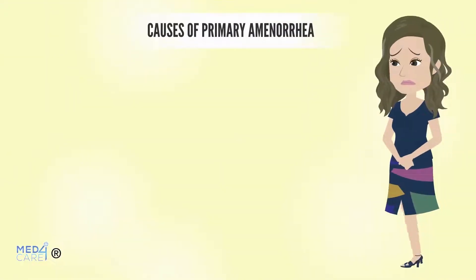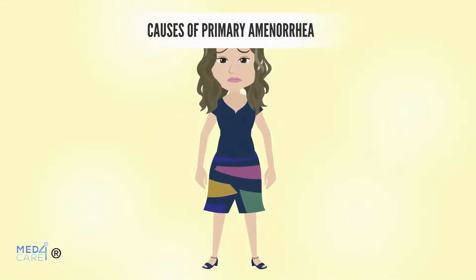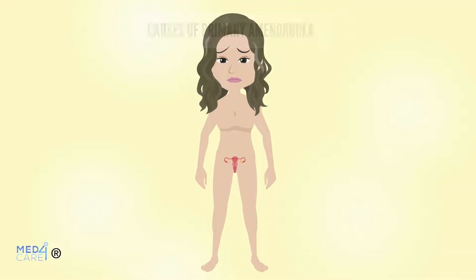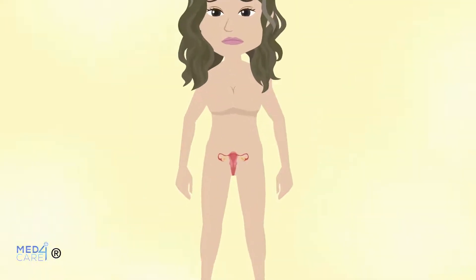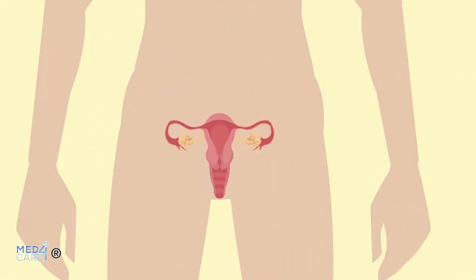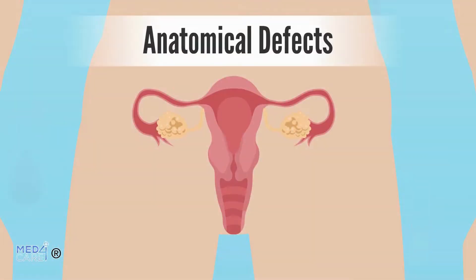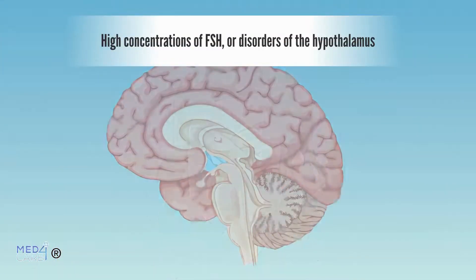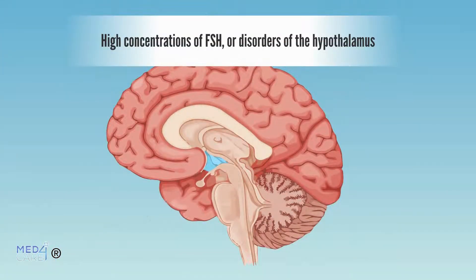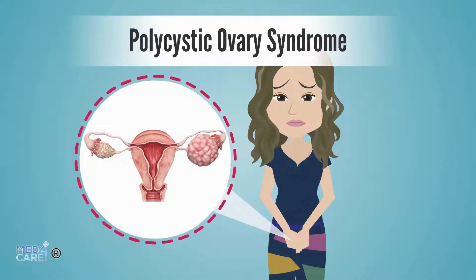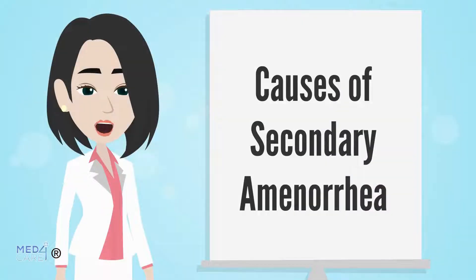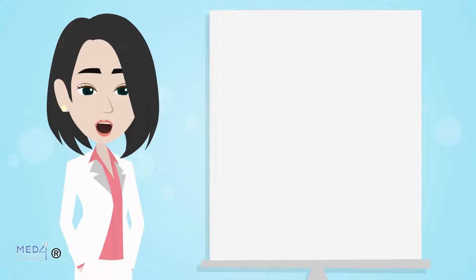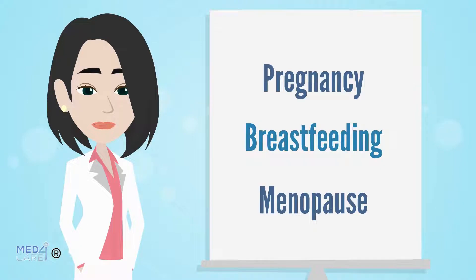The causes that lead to the absence of menstruation must be distinguished in primary and secondary amenorrhea. At the base of the first type, there can be anatomical defects, high concentrations of FSH, disorders of the hypothalamus, or polycystic ovary syndrome. Turning to the causes of secondary amenorrhea, the most common physiological factors are identified in pregnancy, breastfeeding, and menopause.